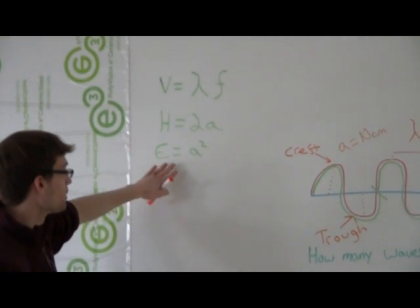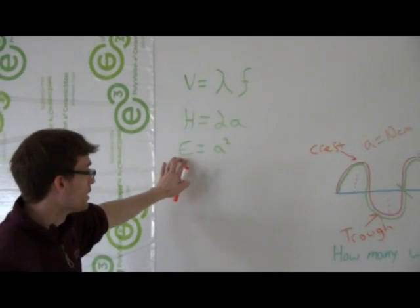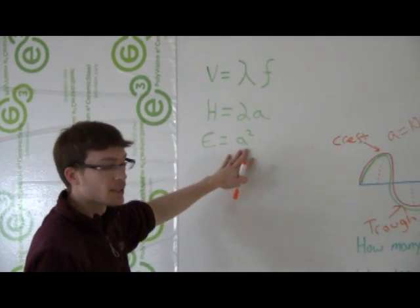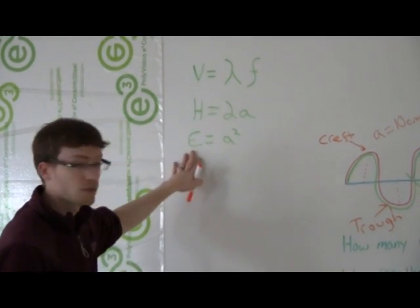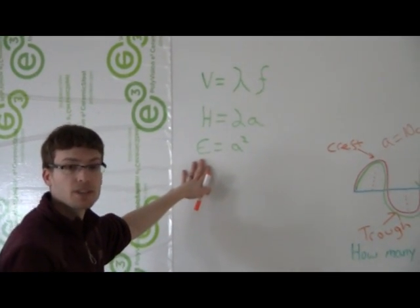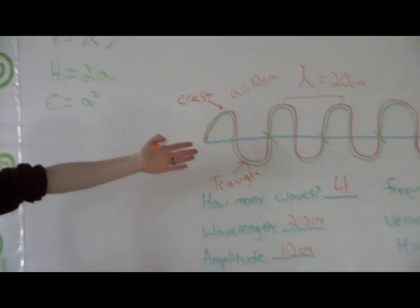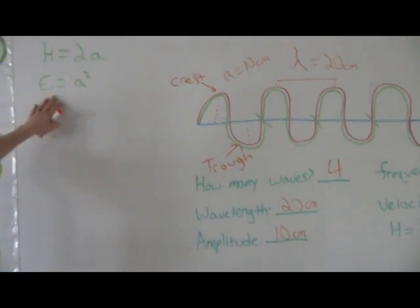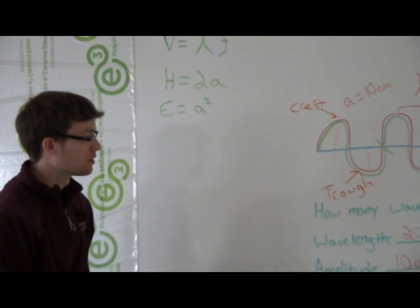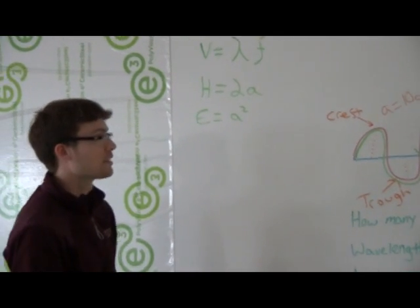You can also, if you're given the energy of a wave, you can find the amplitude by doing the square root, which is the opposite of squaring. So you could say 10, or I'm sorry, find the square root of 100, and that would give you 10. That would give you the amplitude instead. So there are all kinds of things that you can do with these.